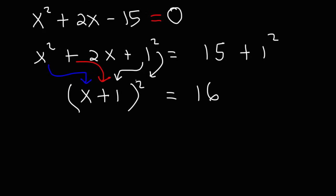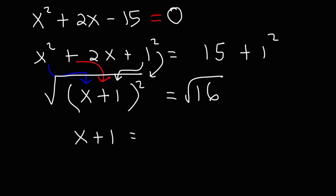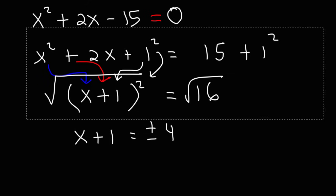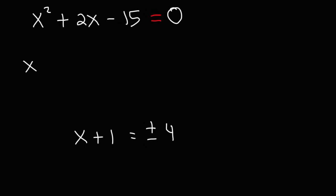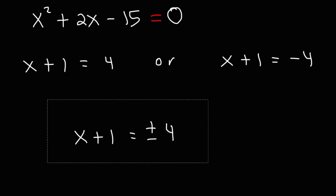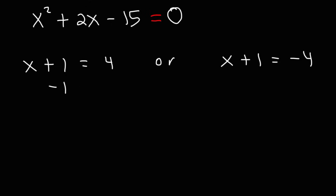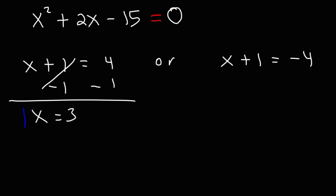So now at this point, in order to get rid of the square, we need to take the square root of both sides. On the left, the square and the square root will cancel, giving us x plus 1. On the right, we need to take the square root of 16, which will give us two answers. The square root of 16 is equal to plus or minus 4. So right now we have two equations: x plus 1 can be equal to positive 4, or x plus 1 is equal to negative 4. To solve the first one, we need to subtract 1 from both sides. So 4 minus 1 is 3 — we get our first answer, x is equal to 3.